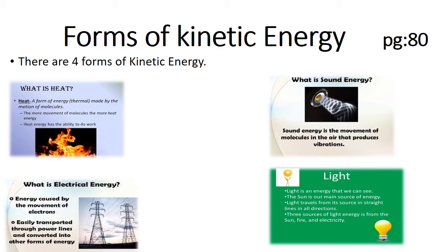The first form of kinetic energy is heat. Heat is a form of energy — it is the movement of particles within a substance. When we heat up an object, its particles move and collide faster. Heat can move from one place to another. Heat cooks our food, changes solid into liquid and liquid into vapor. The sun is our major source of heat.